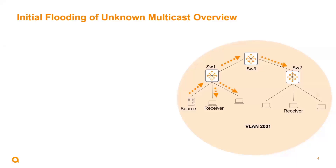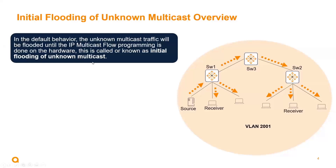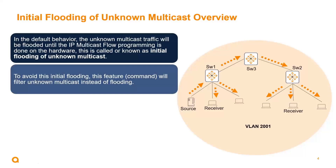What are we trying to address with unknown multicast? The issue is the initial flooding of unknown multicast within the same VLAN. When we have sources and receivers on the same VLAN, unknown multicast traffic will be flooded until IP multicast flow programming is done on the hardware. This is what is called the initial flooding of unknown multicast, and we'll look at the impact it has.